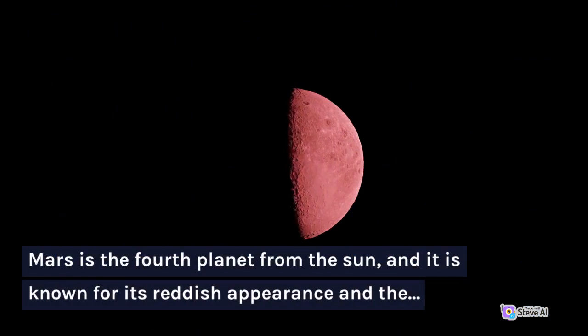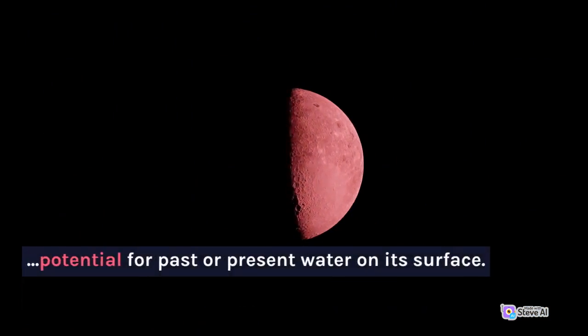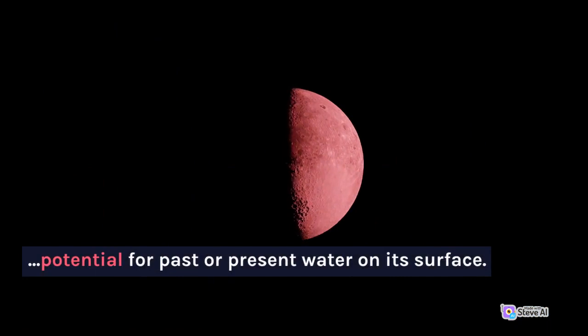Mars is the fourth planet from the sun and it is known for its reddish appearance and the potential for past or present water on its surface.